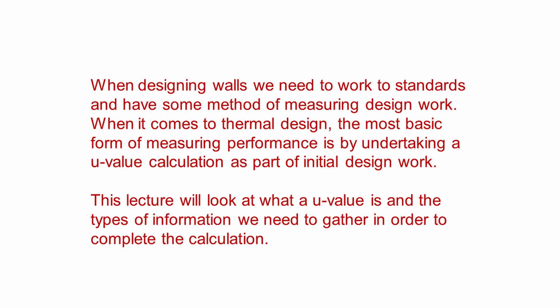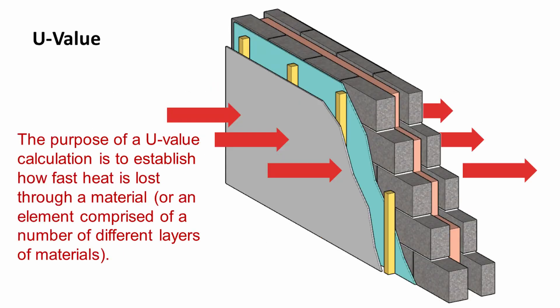When we design a wall, we need to work to standards and have some method of measuring our design work. When it comes to thermal design, the most basic form of measuring performance is by undertaking a U-value calculation as part of initial design work. This lecture is going to look at what a U-value is and the types of information we need to gather in order to complete the calculation. The purpose of a U-value calculation is to establish how fast heat is lost through a material or a component comprised of different layers of materials.